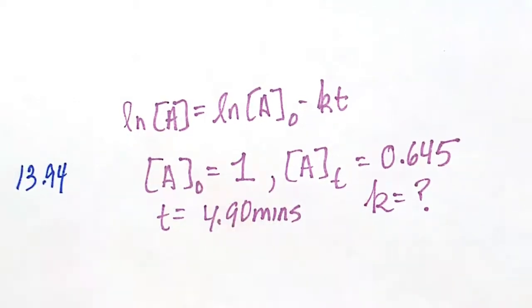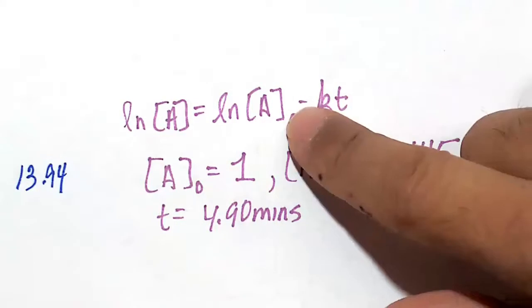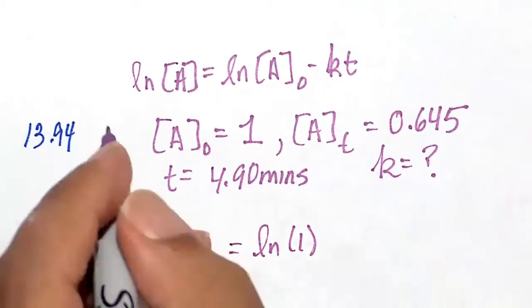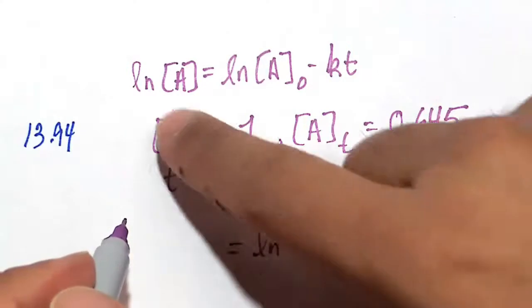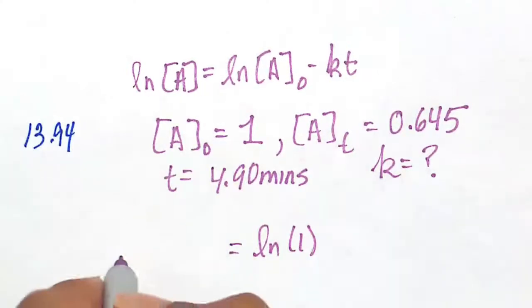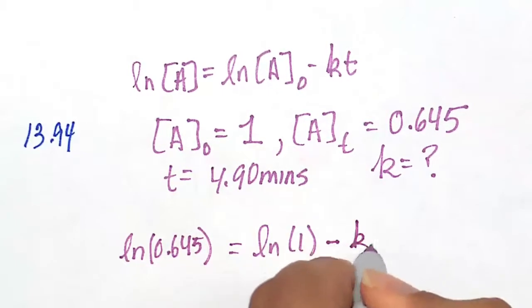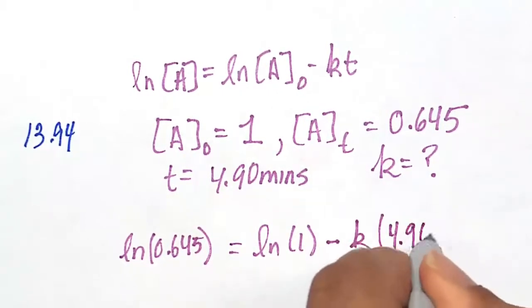So let's plug everything in here. So natural log of, initially, it's 100% or 1. By the way, the natural log of 1 is 0. So that's going to be, it's just going to be a 0. Natural log of 4.90 minutes is 0.645 minus K. That's what we want to solve for. And then T is 4.90 minutes.